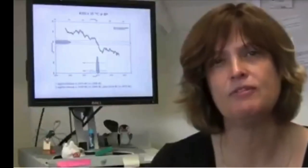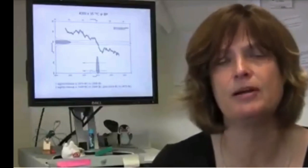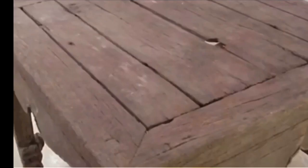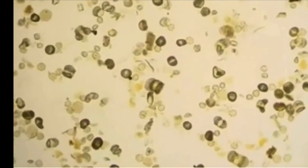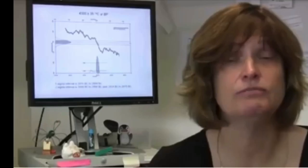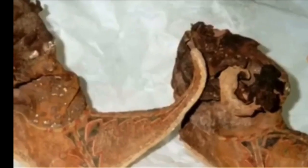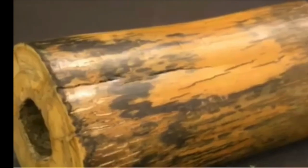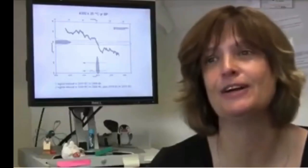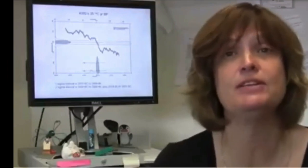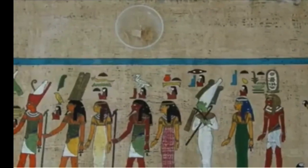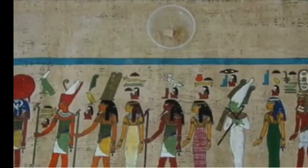So the types of materials that we normally radiocarbon date include things like wood, plant remains, charcoal from charred wood, animal products like bone or leather or sinew or horn or antler or skin, parchment, and also archaeological artifacts that are made from plants and animals.